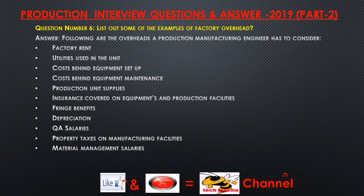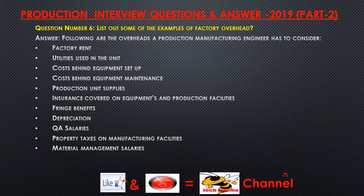Question number six: List out some examples of factory overhead. Answer. The overheads a production manufacturing engineer has to consider include: factory rent, utilities used in the unit, costs behind equipment setup, equipment maintenance costs, production unit supplies, insurance covering equipments and production facilities, fringe benefits, depreciation cost, salaries, property taxes on manufacturing facilities, and material management salaries.